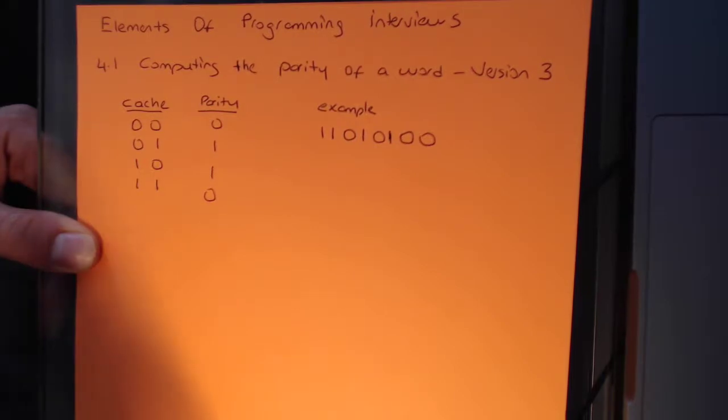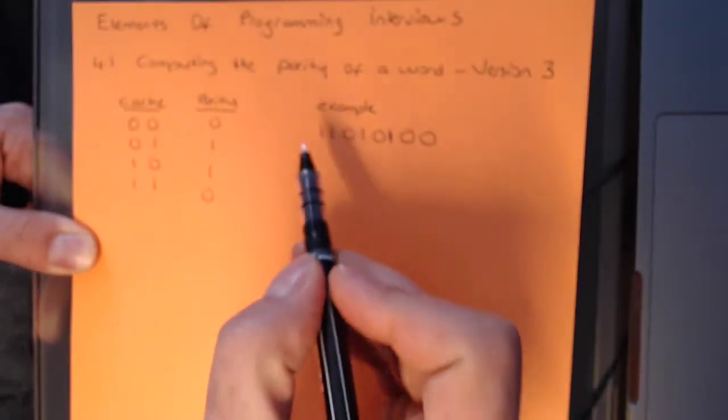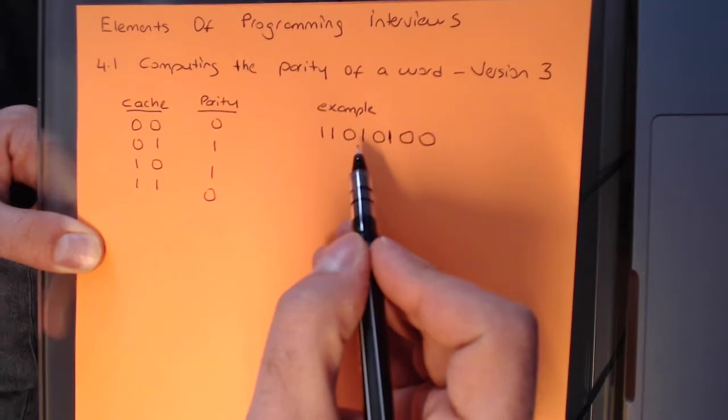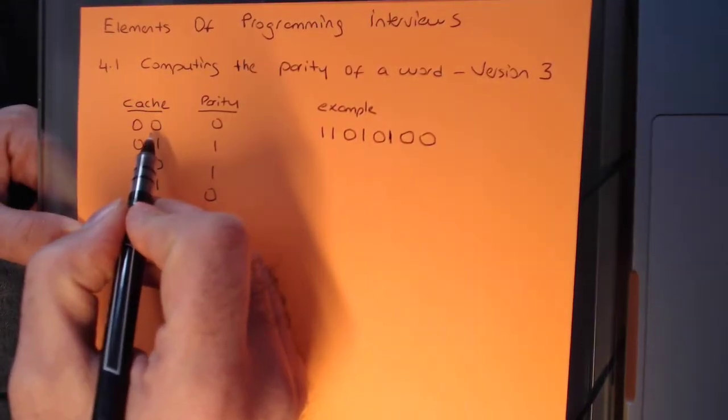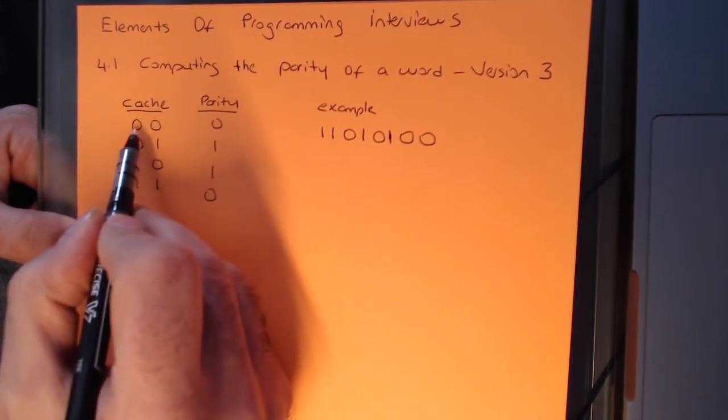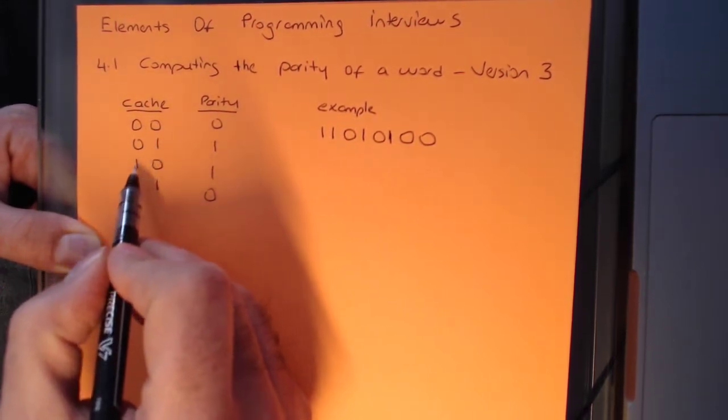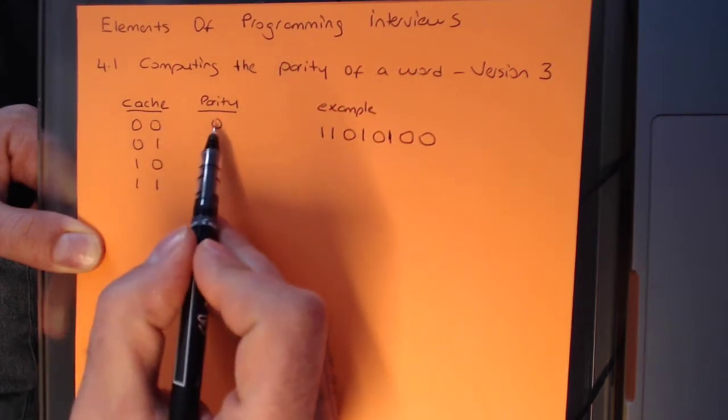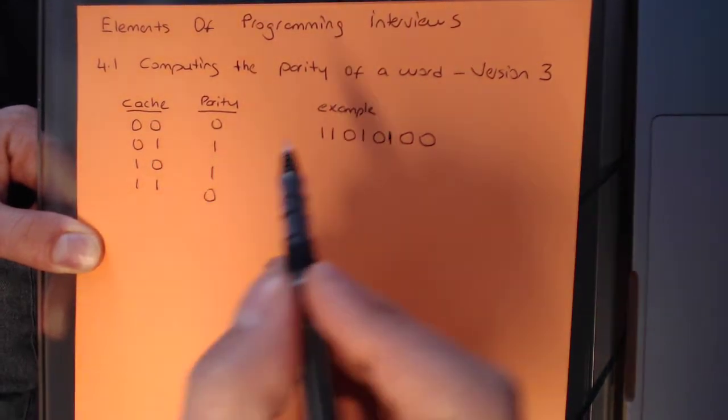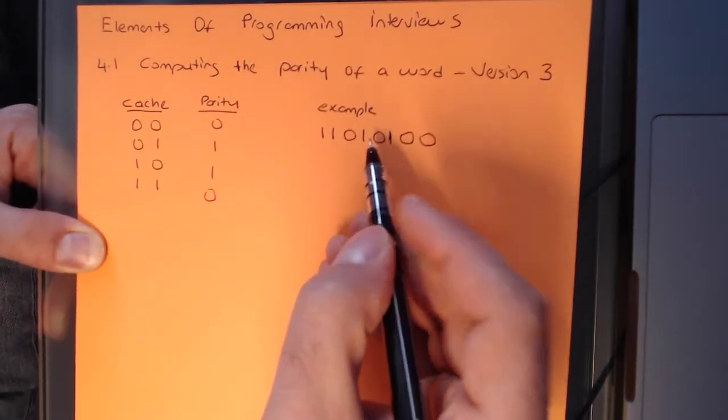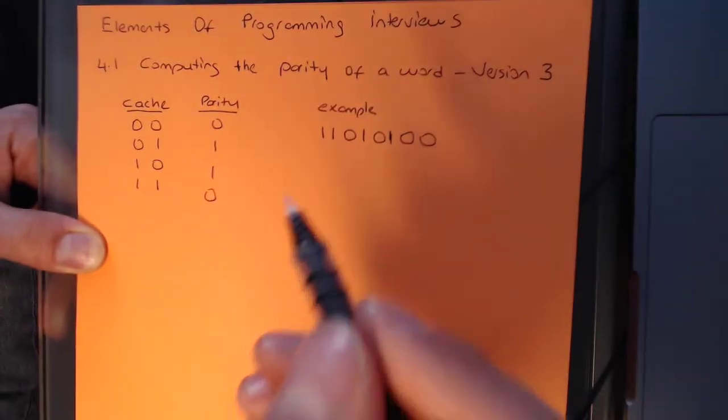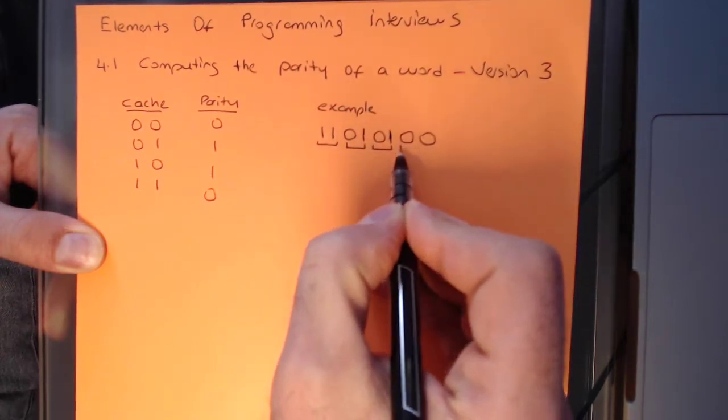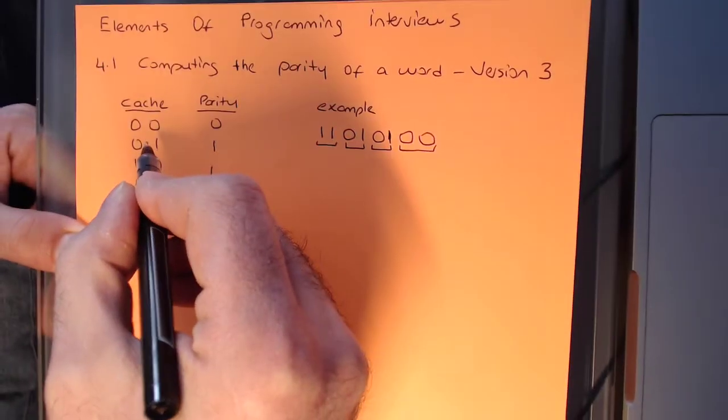I will demonstrate it with a few examples. Imagine, not a 64-bit, but just for simplification, let's say we have an 8-bit binary word and we want to use a 2-bit cache. So the possible values for the 2-bit cache would be 0-0 bits, 0-1 bit, 1-0 bit, and 1-1 bit. The approach is basically to take a look at 2 bits at a time and look up the parity for that number.